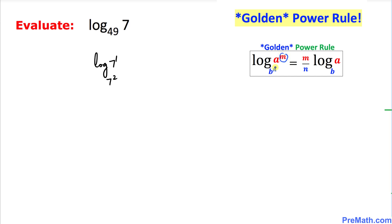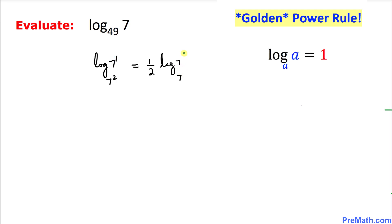The golden power rule states that with exponents m and n for argument and base respectively, we move them to the front as the fraction m over n. Here our exponents are 1 and 2, so we get 1 over 2 times log of 7 with base 7. Since the base and argument are both 7, that equals 1, so our answer is 1 over 2.